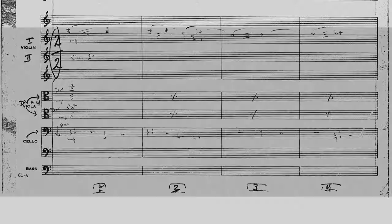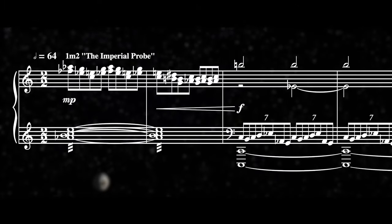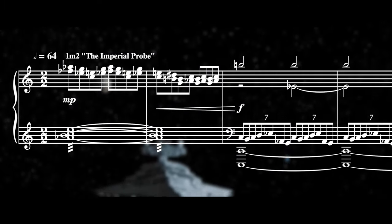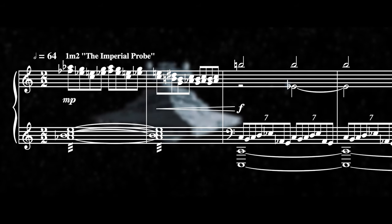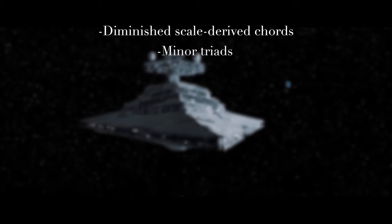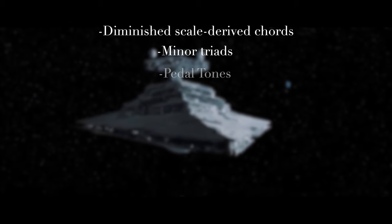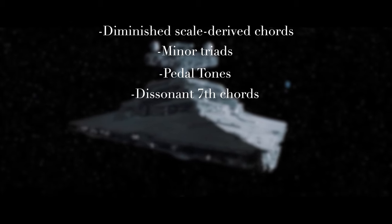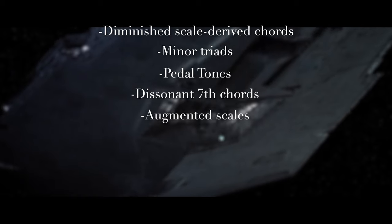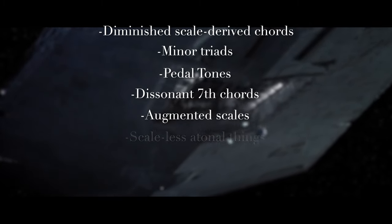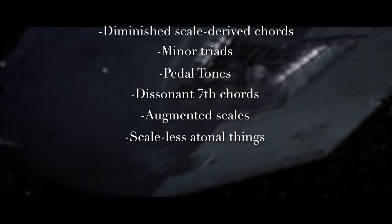Immediately, the flutes continue where the text crawl left off with some thirds in C harmonic major. The cue continues on with diminished scale derived chords, some minor triads, some pedal tones, dissonant 7th chords, several uses of augmented scales, and plenty of just straight up scaleless atonal things.